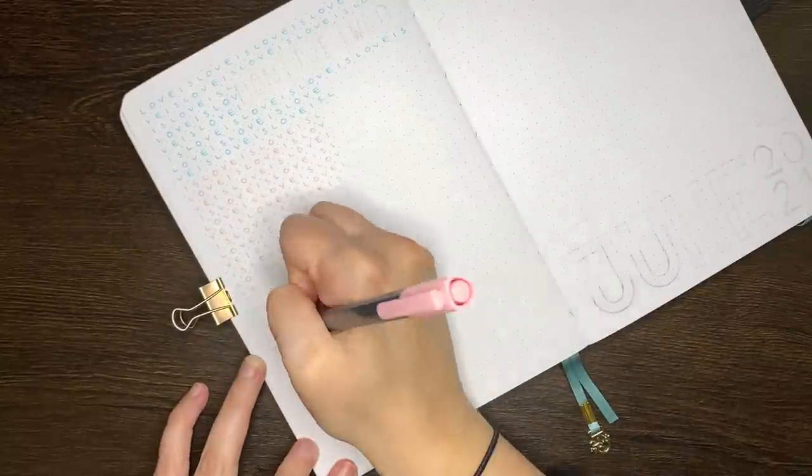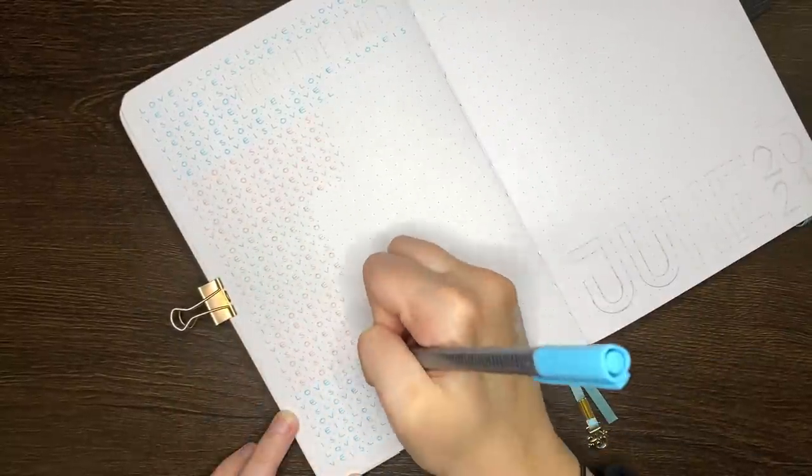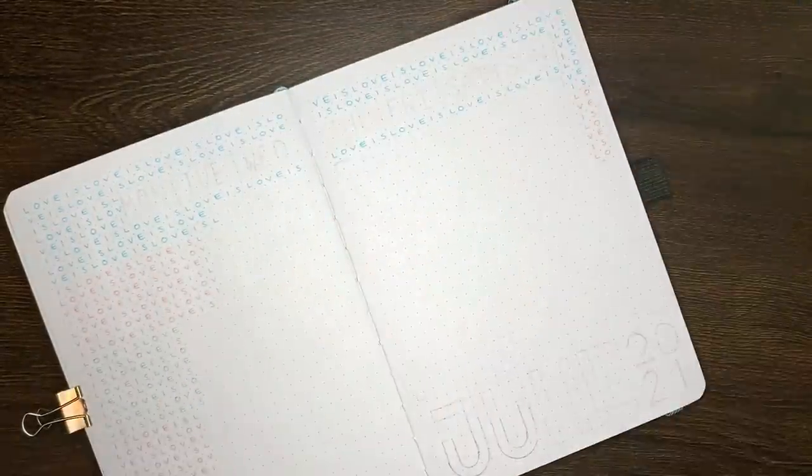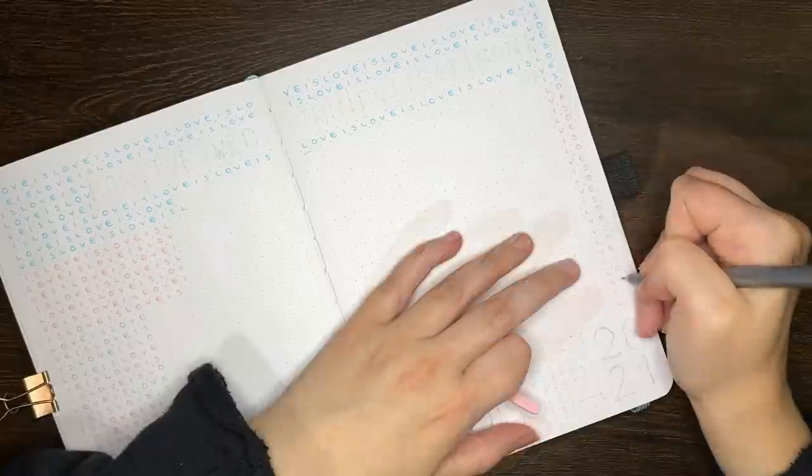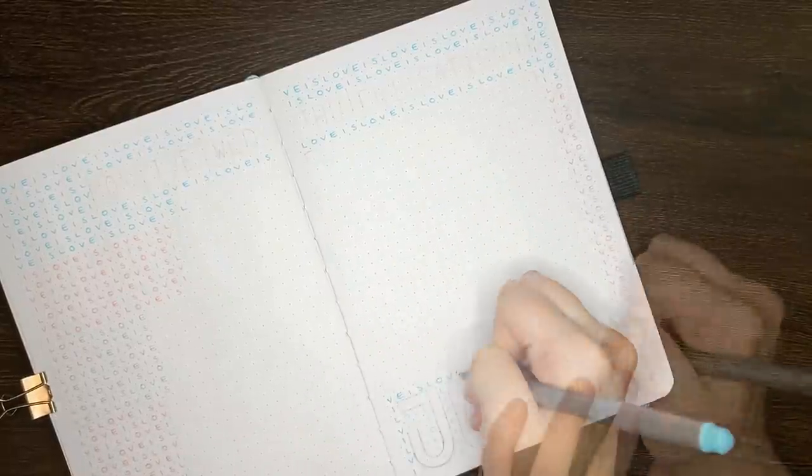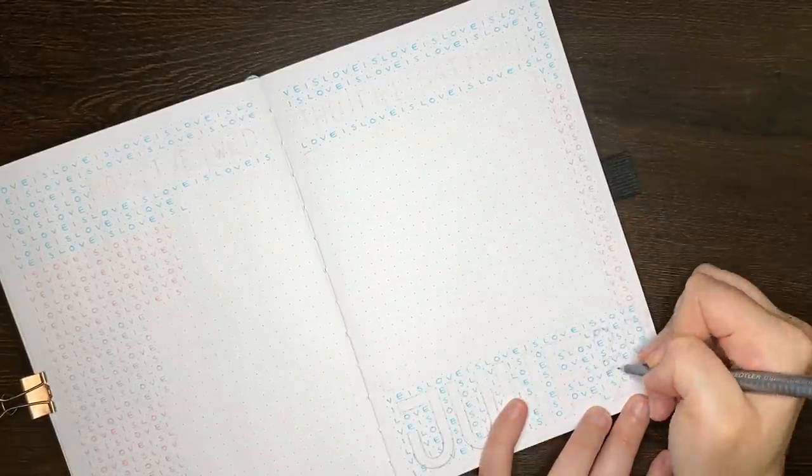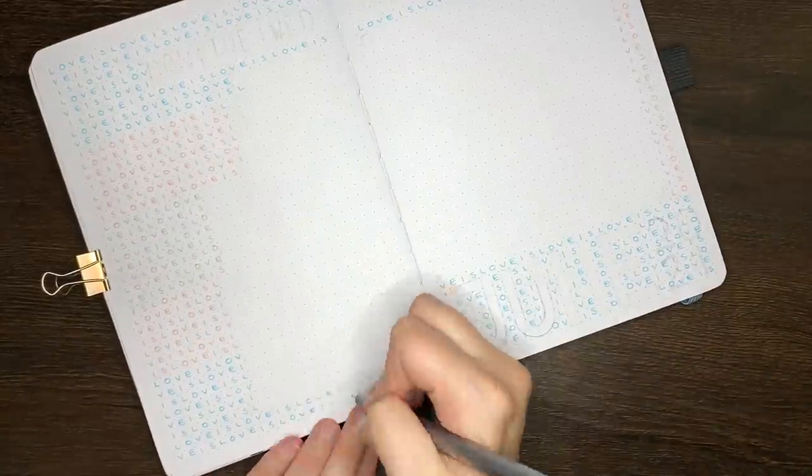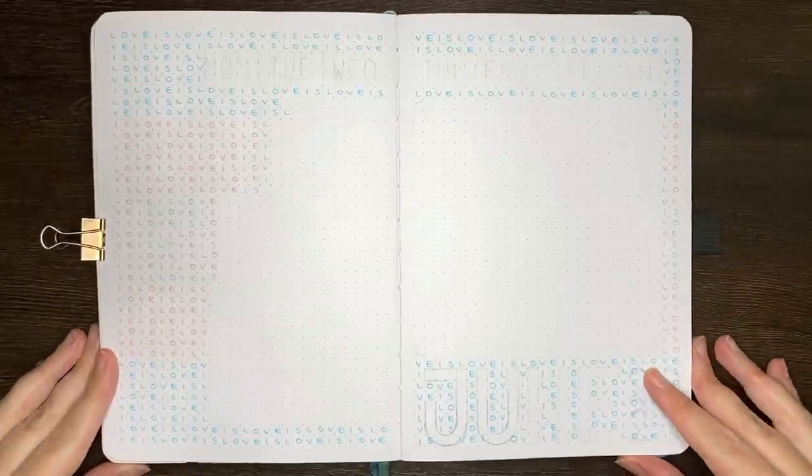So that the background didn't distract from the writing in of events, which will eventually go on this spread, I switched from the Tombow brush markers to my Staedtler Triplus fineliners, to write in the love is love background. These pens have a much thinner tip, so make the background a little more subtle. You'll see I again used light grey for the white section of the flag, and I also did leave some blank space for where my calendar boxes are going to go.